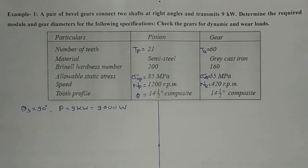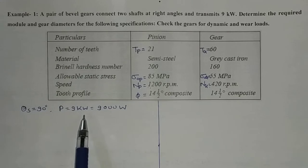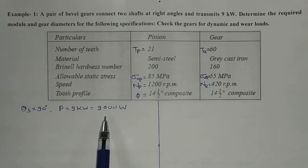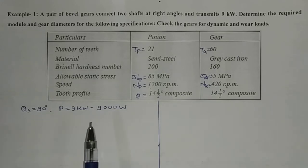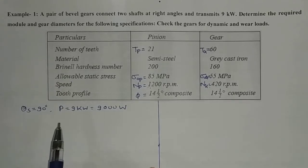Both the shafts are at right angles to each other, so therefore theta_s is equal to 90 degrees, and power to be transmitted is equal to 9 kilowatt, that is 9000 watt. Now we have to find the module and diameter and then check this design for the dynamic as well as the wear load.